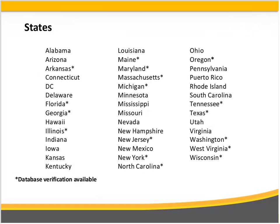SafeLink is not yet available in all 50 states — to be approved in each state, they must petition through the state's public utility commission. The states with asterisks by them indicate that database verification is available, meaning the individual may not have to provide physical proof of program enrollment, as SafeLink can check through backend database access. SafeLink is available in most states, as well as the District of Columbia and Puerto Rico. If SafeLink is not in your state, contact your state public utility commission about getting SafeLink there.